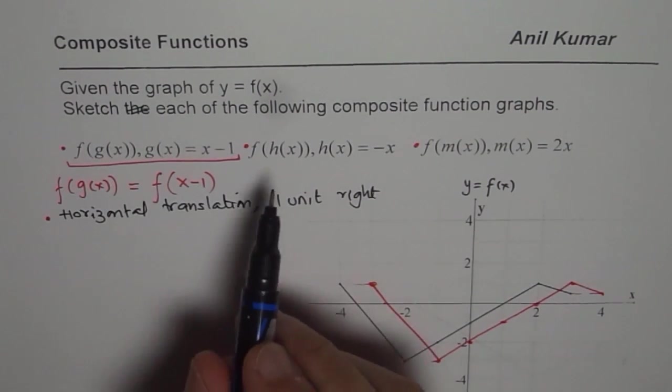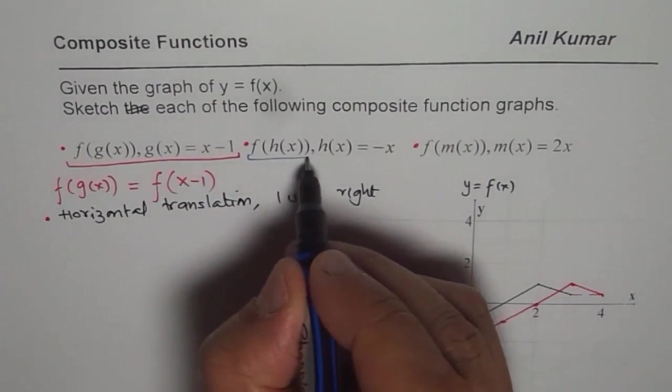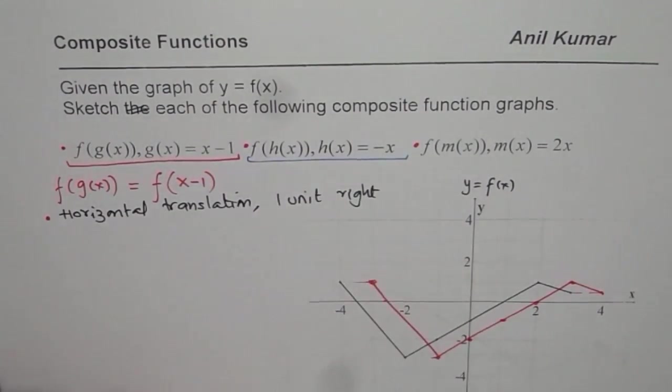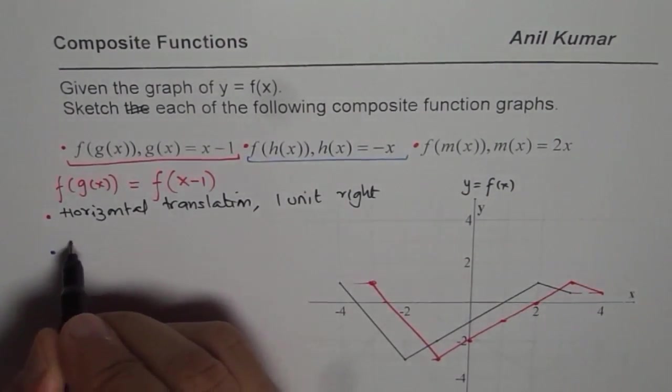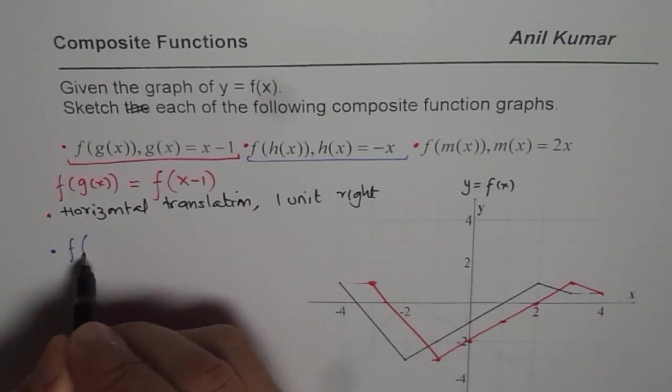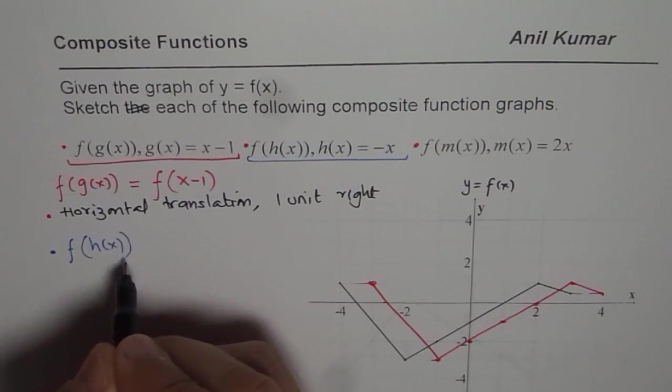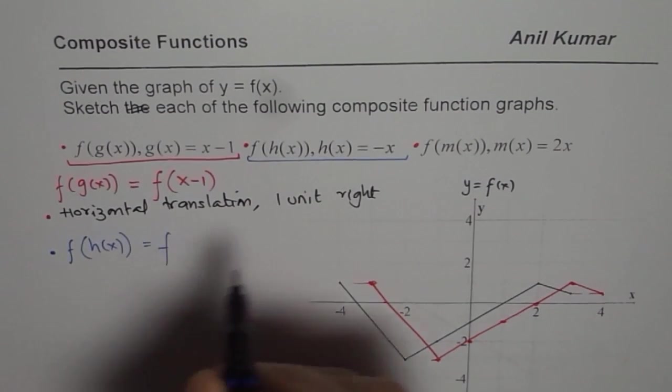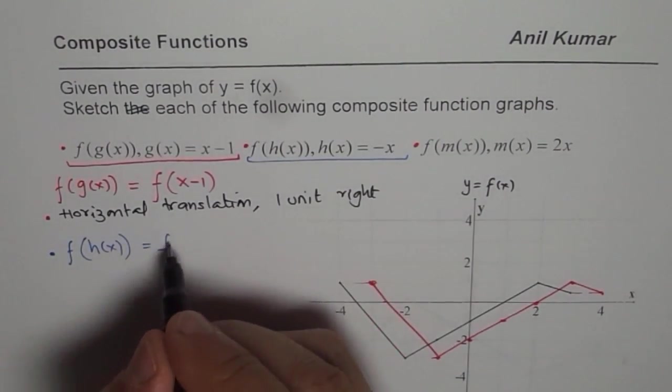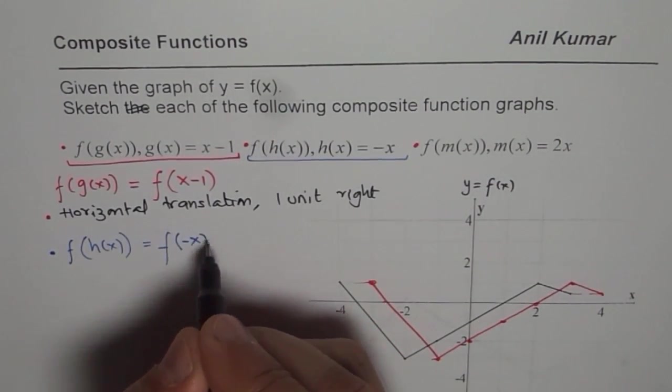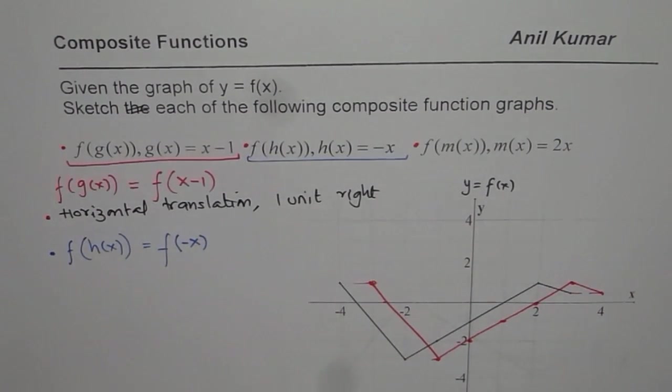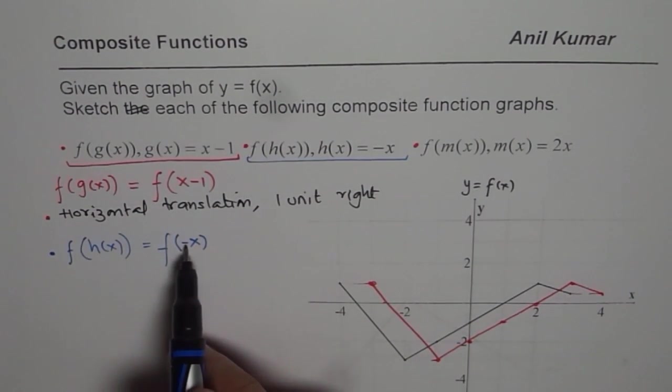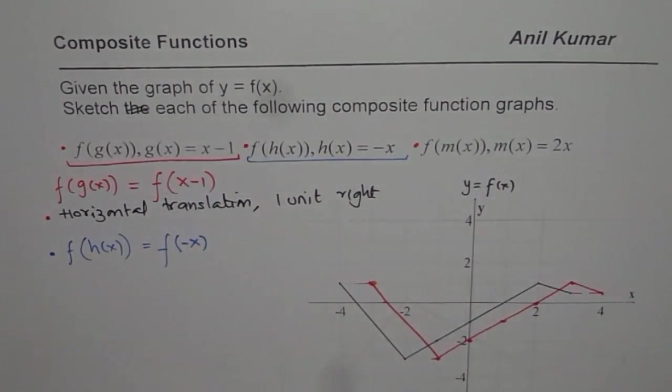Let's try the next one. The next one is this one where h of x is minus x. So the next one is f of h of x. We are given h of x is minus x, so I will write f of minus x. Now what does that mean? It means it is reflected on y-axis.